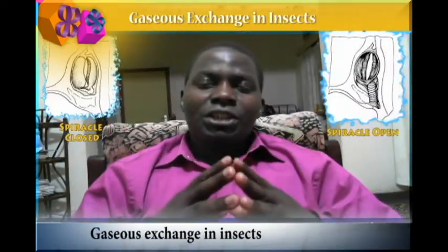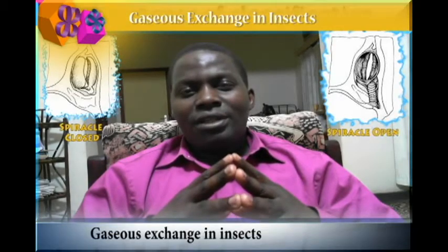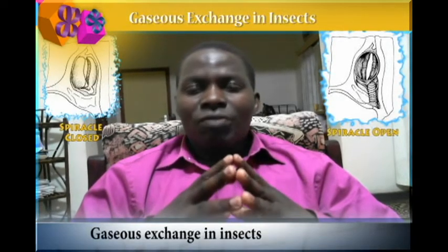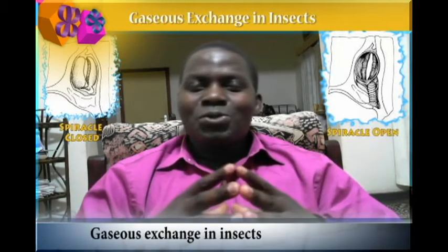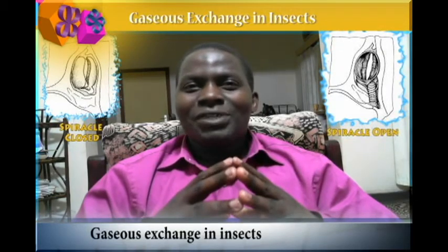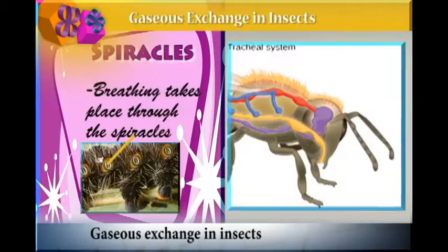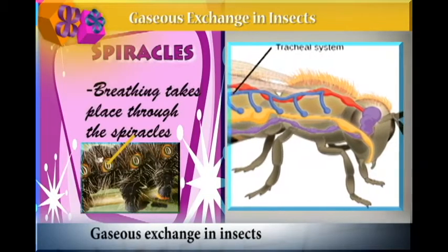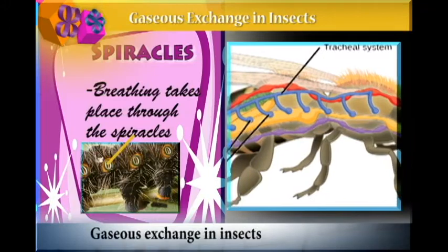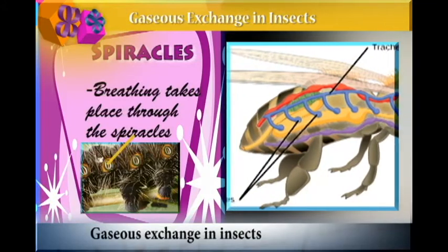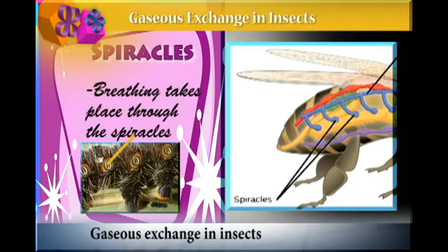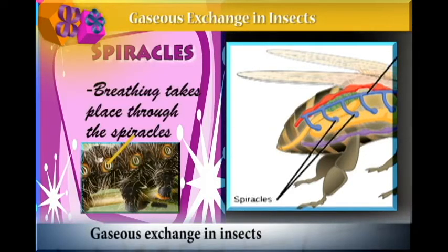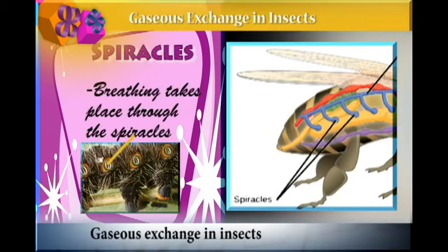We are looking at gaseous exchange in insects. We have all seen insects, and maybe we have not seen them having nostrils for taking in oxygen. The breathing process in insects is carried out through tiny holes on the abdomen and thorax sections of the insect. Those pores are called the spiracles, and they are mainly found on the lateral sides of the insects.